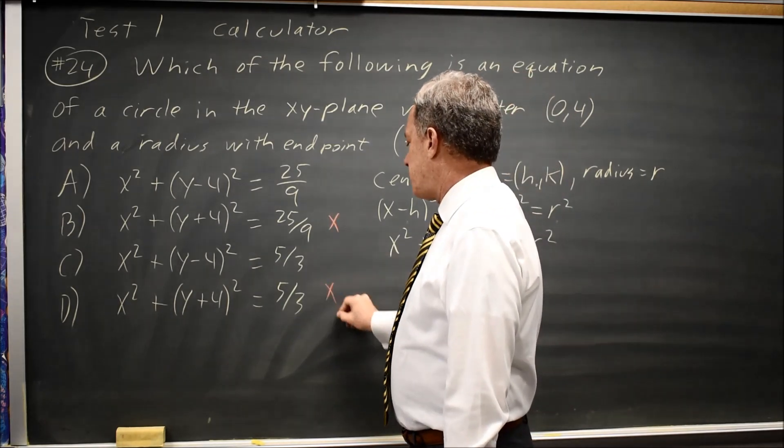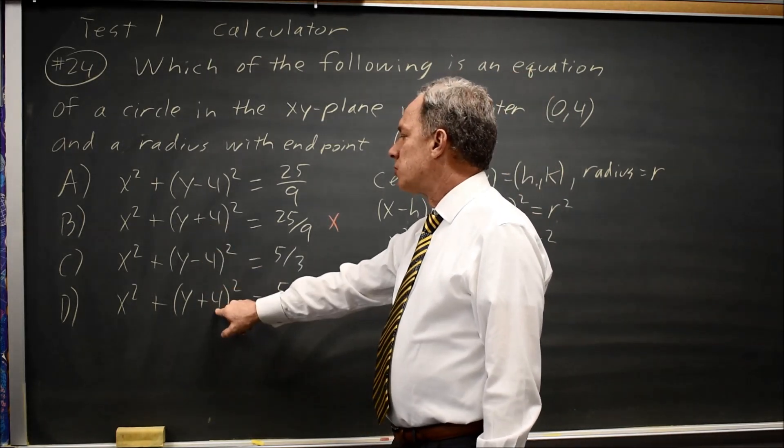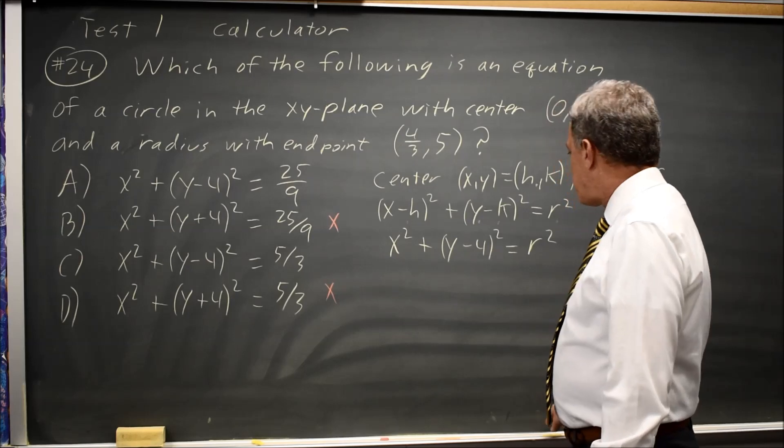This answer is wrong, and this answer is wrong because they're y plus 4. Choices A and C have y minus 4.